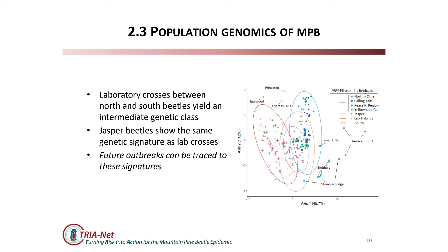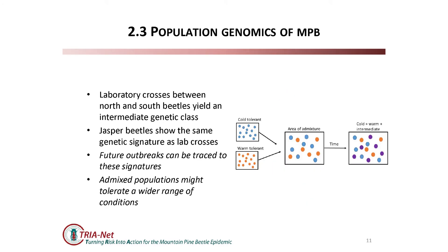We have a toolkit that allows us to trace back beetles to their source population. In this case, where the source population is clearly admixed, it has a specific signature we can pull out, so future outbreaks from there could potentially be traced using this toolkit. It raises an interesting question: if the northern type is more adapted to colder climates and the southern type to warmer climates, what happens when you put them together in this admixture zone? It's not a big stretch to think you'd have a fairly diverse population able to cope with a broader range of conditions than either original type.